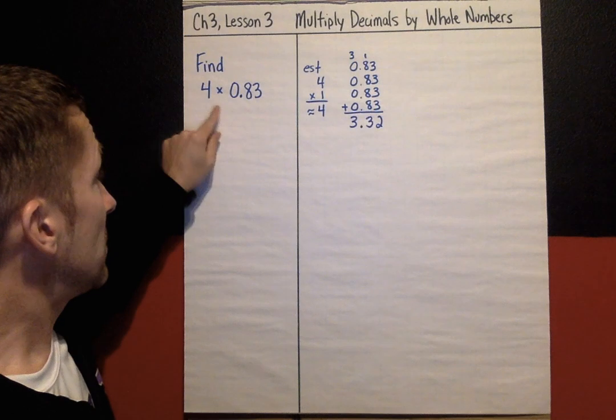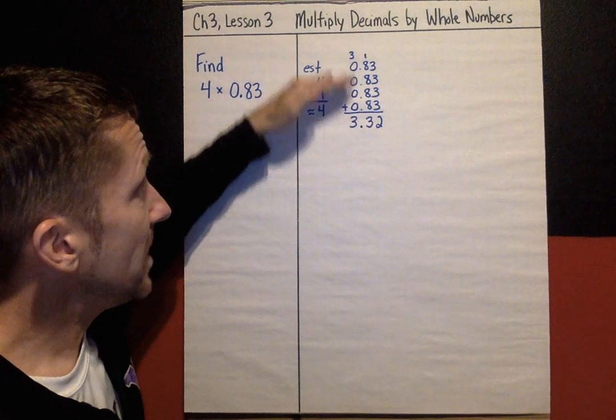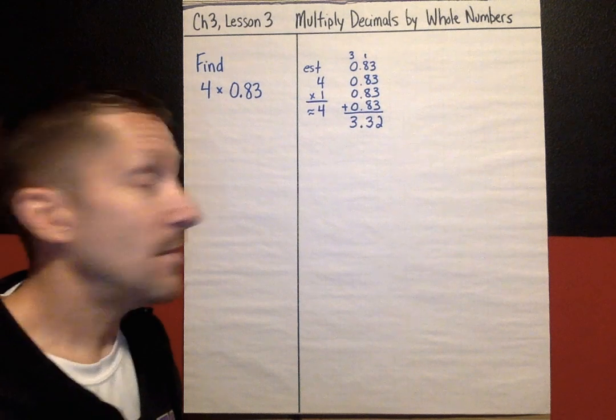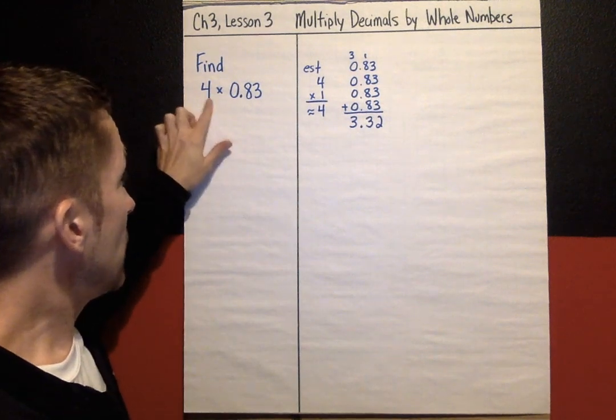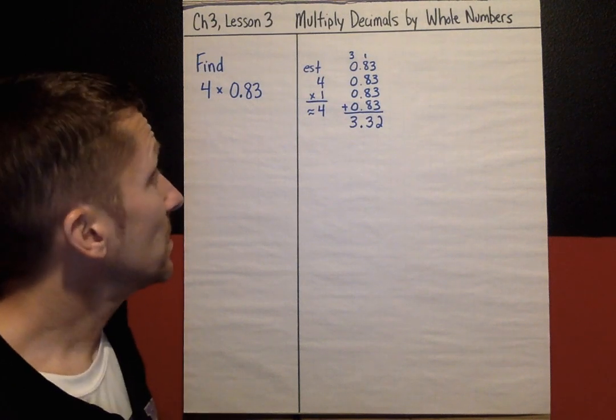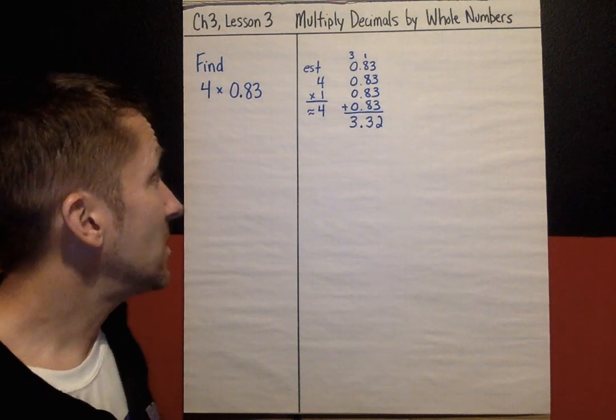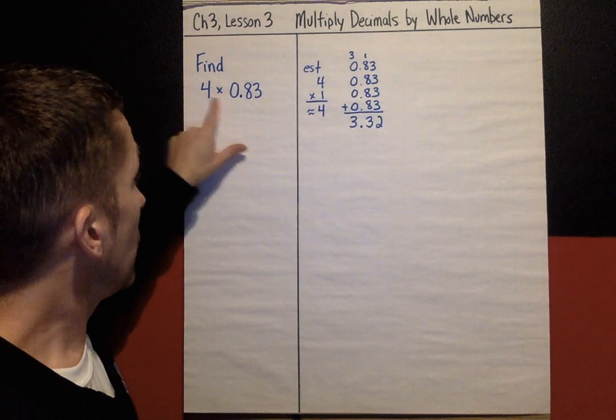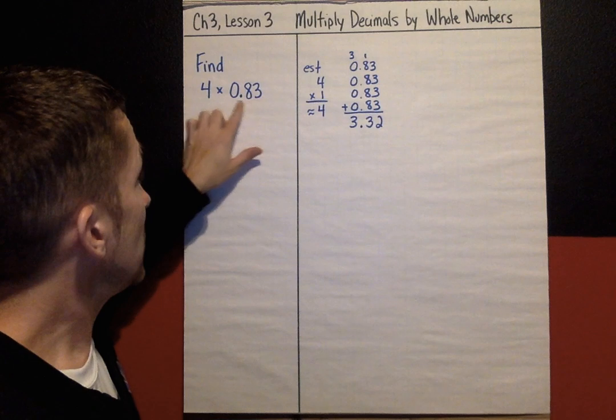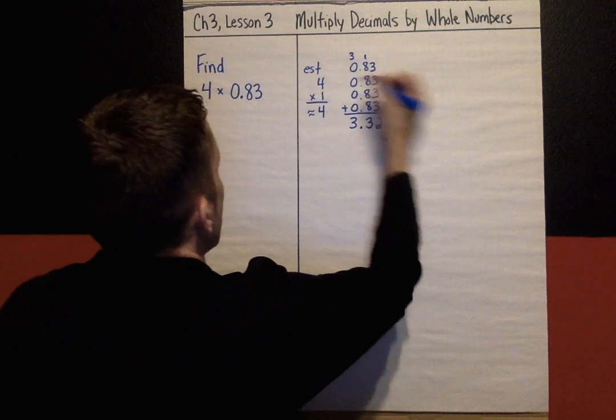Now, let's say this was 9 times 0.83. I'd have to write 0.83 nine times and add that all up. Well, if that number was even bigger, I don't want to write down, it's a lot of writing, too much work to solve. Let's go to multiplying, which is the shortcut for repeated addition. So if I'm multiplying a whole number times a decimal, I want the number with the most digits on top. So that would be 0.83.